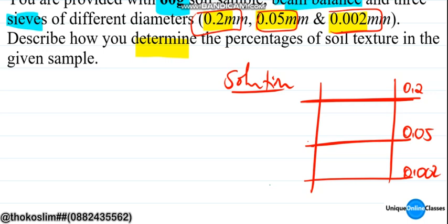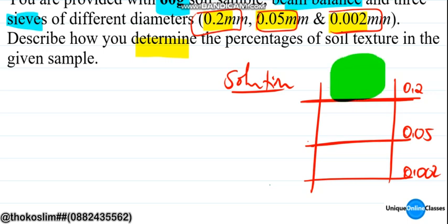Sometimes it has to be done carefully. We will do it in a different way — we will shake the sieves until the soil particles are separated, and then we will collect them.